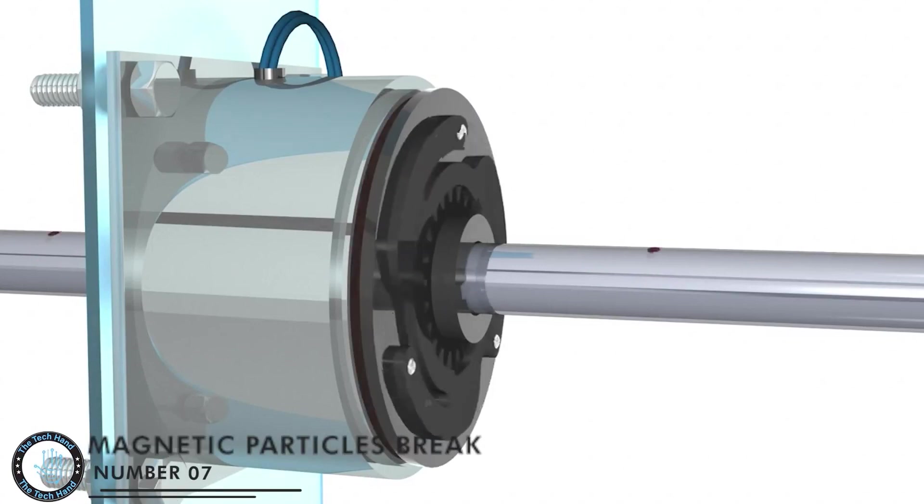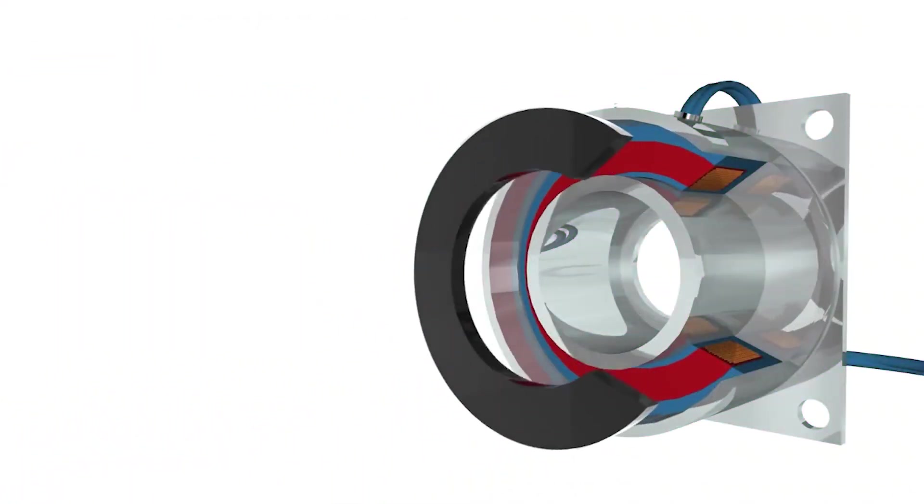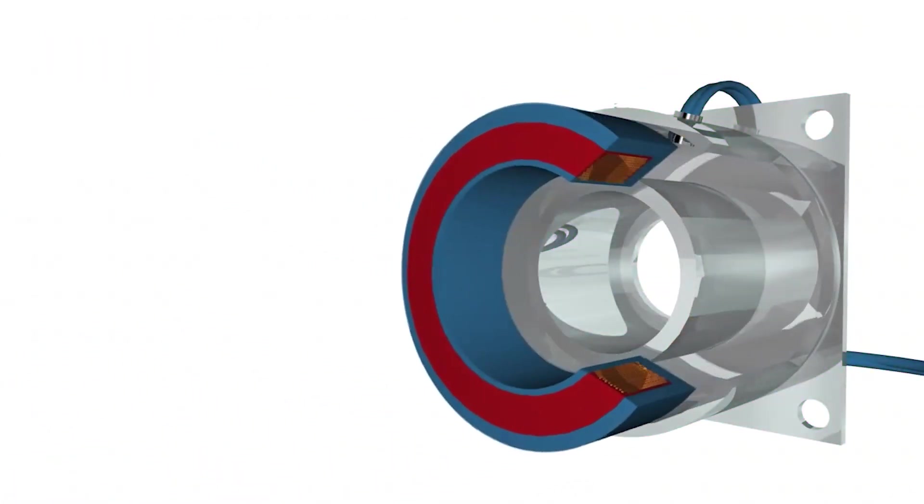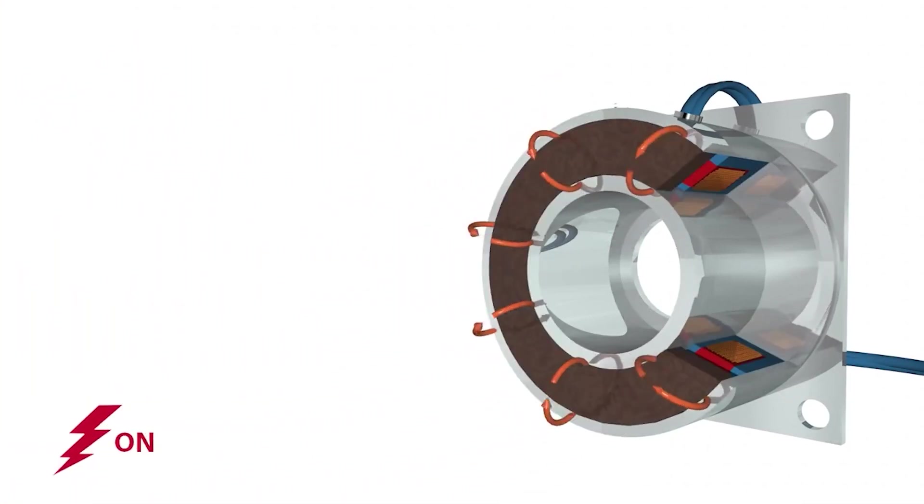Number 7: Magnetic Particle Brakes. Magnetic particle brakes are a type of braking system that uses magnetic particles to create a frictionless braking system. The particles are attracted to each other when a magnetic field is applied, which creates a force that slows the motion of the object.